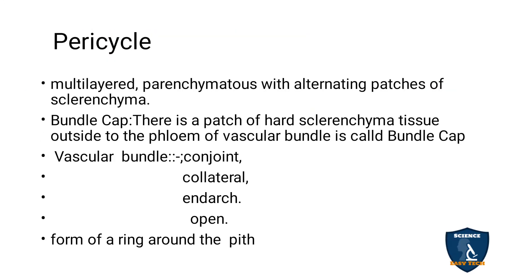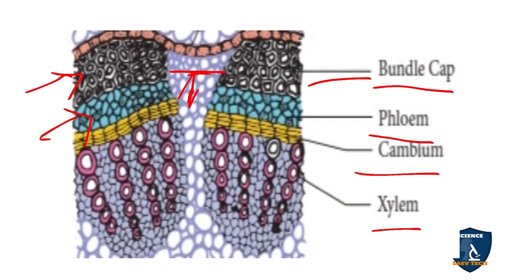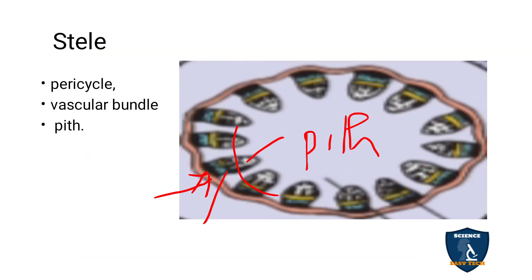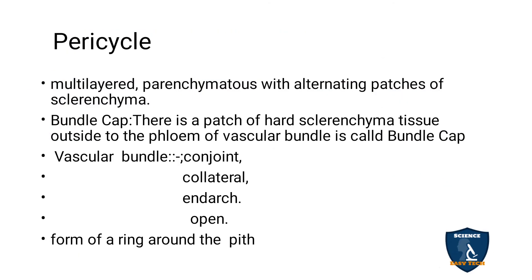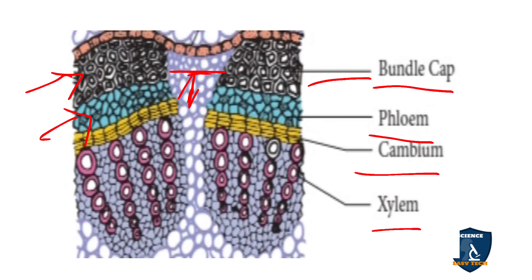The vascular bundles form a ring arrangement. Conjoint means phloem and xylem form a bundle together; they are present on the same radius. Since cambium is present between xylem and phloem, the bundle is known as open.